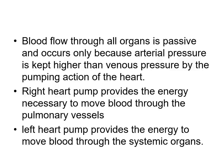Blood flow through all organs is passive — it is not an active process. It occurs only because the arterial pressure is kept higher than the venous pressure by the pumping action of the heart. Due to the pumping action of the heart through the aorta to various vessels in the body, the arterial pressure is kept higher than the venous pressure, leading to flow of blood through the organs. The pump in the right heart provides energy necessary to move blood through the pulmonary vessels to the lungs where the blood gets oxygenated, and the pump in the left heart provides energy to move the blood through the systemic organs.